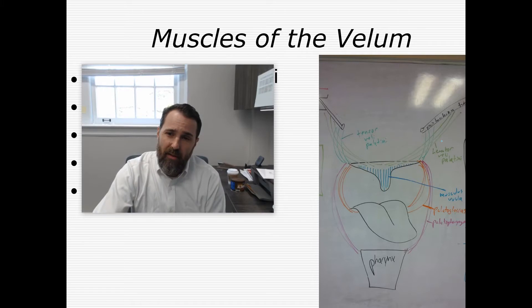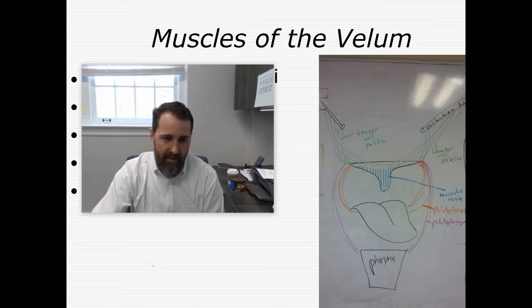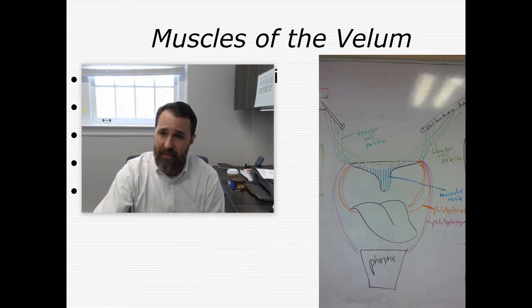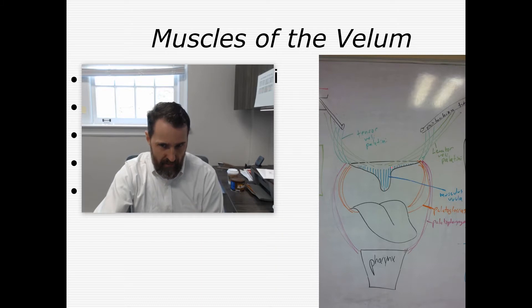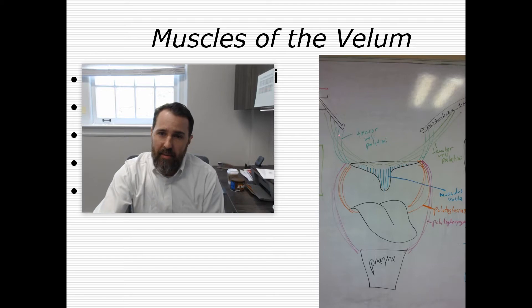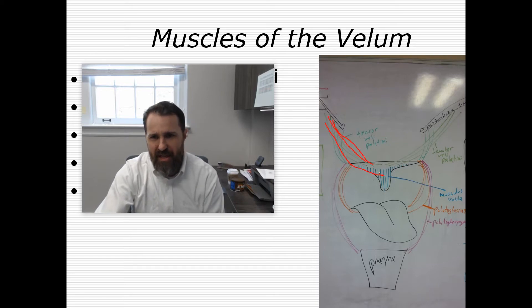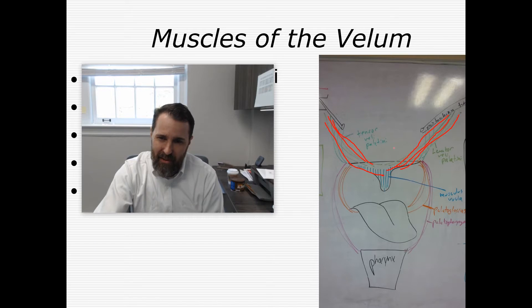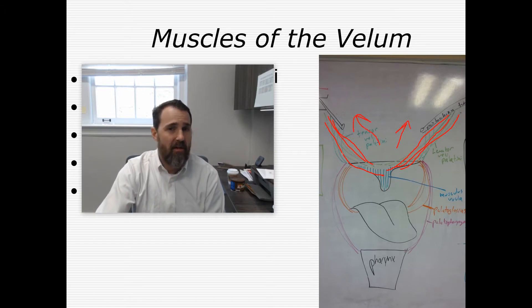To begin with, let's talk about the levator veli palatini. You're hearing the term 'levator' and the word 'palatini,' which means soft palate. The levator veli palatini originates up near the eustachian tube and courses down into the body of the soft palate. If this muscle contracts, it is going to elevate the soft palate.